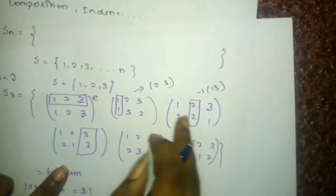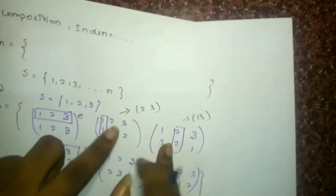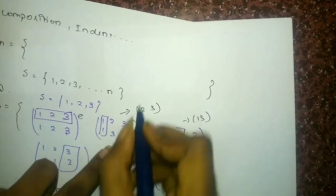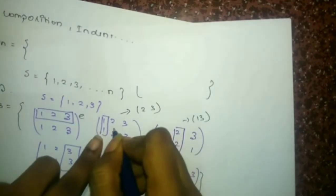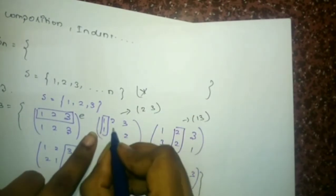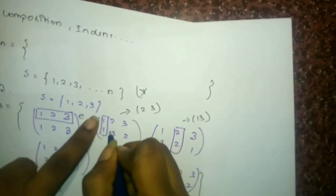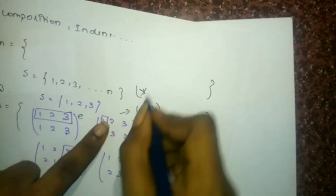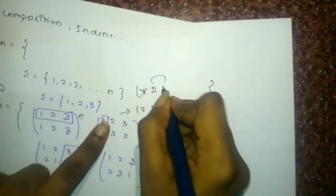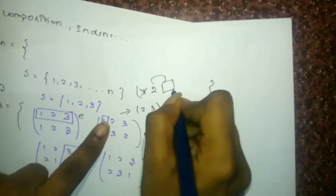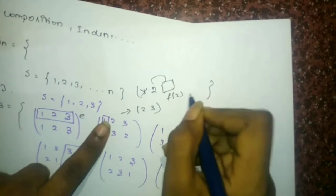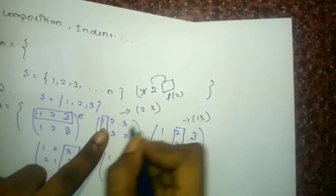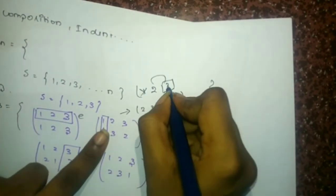I think we have already discussed it. I'll just take this as an example and explain. Since 1 is mapped to 1 itself, I'm not going to start with 1. So I'll start with 2. I'm going to fill up the box in such a way that it is f of 2. Since 2 is mapped to 3, I write 3 here.